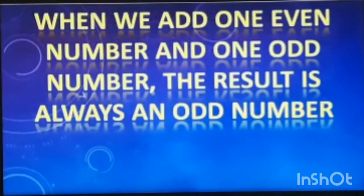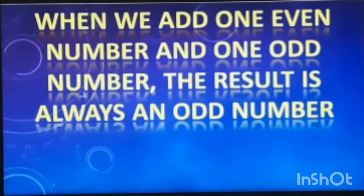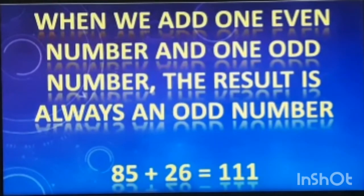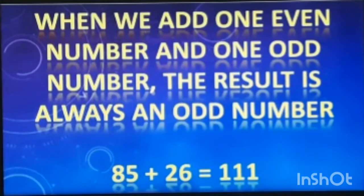When we add one even number and one odd number, the result is always an odd number. Let me take some examples so that you can understand this. 85 and 26 are one odd and one even number. If we add them, we get 111, which is an odd number.